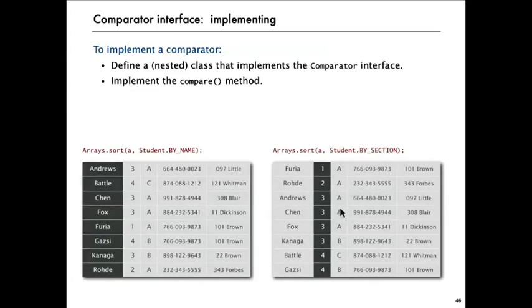Here's just an example of what happens with those implemented comparators for that class student using the Java system sort. If you call arrays dot sort with your array of students and you give it this by name comparator, it'll put them in order, alphabetical order by the name field. And if you give it the by section comparator, it'll put them in order by the second field. Very convenient for all kinds of data processing applications.